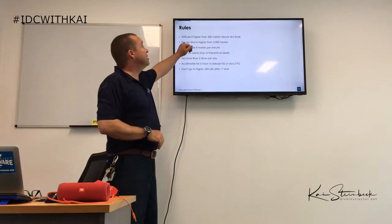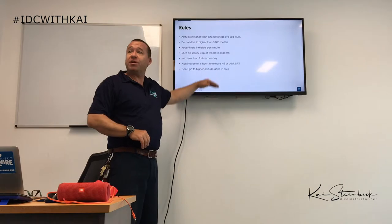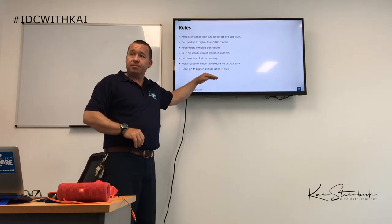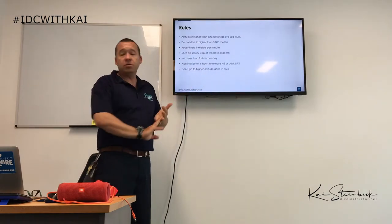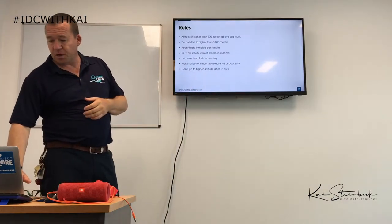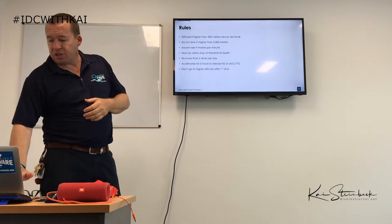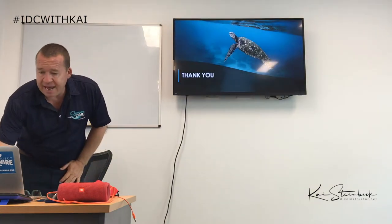Don't go to higher altitude after your first dive — so if you're doing a dive at 600 metres, don't do your second dive at 1,200 metres. These altitude rules, except the 300-metre rule, are not written on your tables, but they are rules nonetheless.